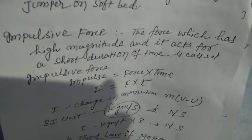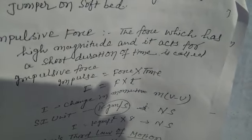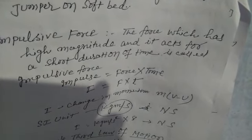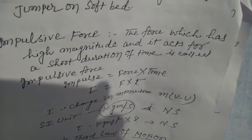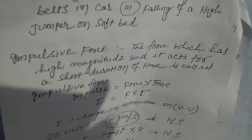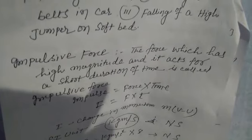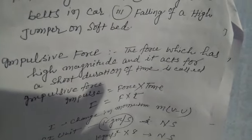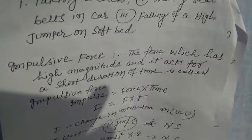Impulse force: a force which has high magnitude and acts for a very short duration of time is called impulse force. A force acting on a body for a very short time interval with a change in magnitude is called impulse. The impulse is equal to force multiplied by time, and is denoted by I. The SI unit of force is Newton and time is seconds.